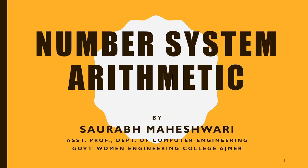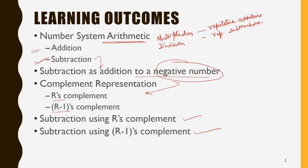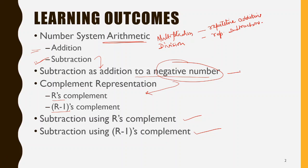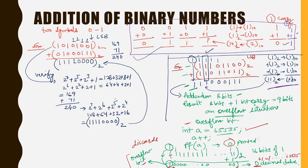Hello students, welcome to the next lecture of the series on number system arithmetic. What we have done till now is how to do addition and subtraction of binary, octal, and hexadecimal number systems. Then we looked at how to perform subtraction as an addition operation by converting numbers to negative numbers, and we saw how to represent a negative number in sign-magnitude representation. In this lecture, we will look at complement representation to represent numbers as negative numbers.